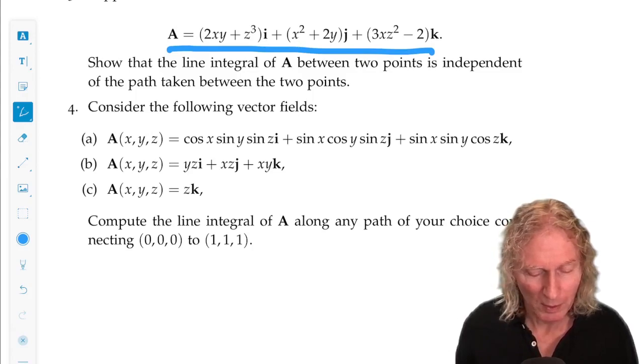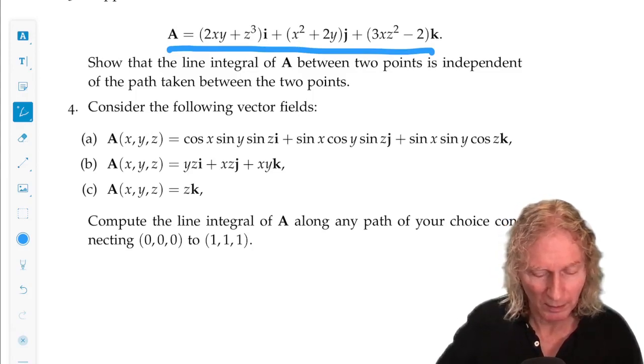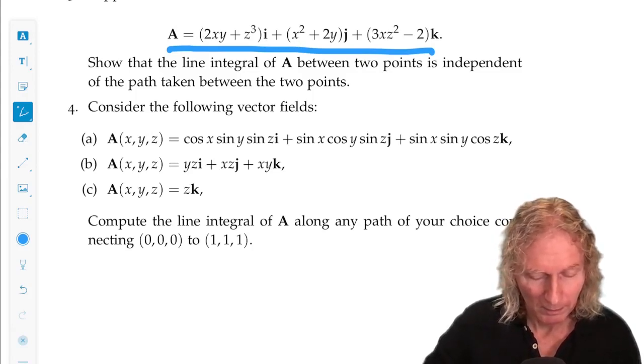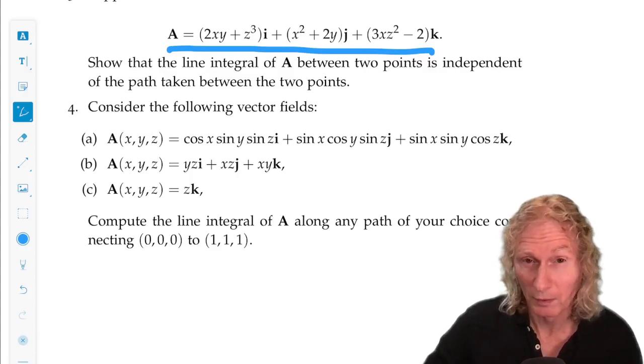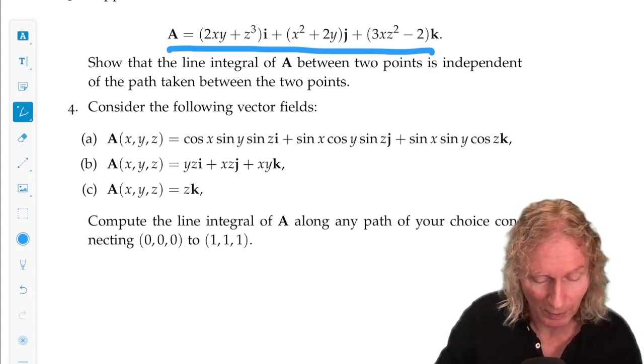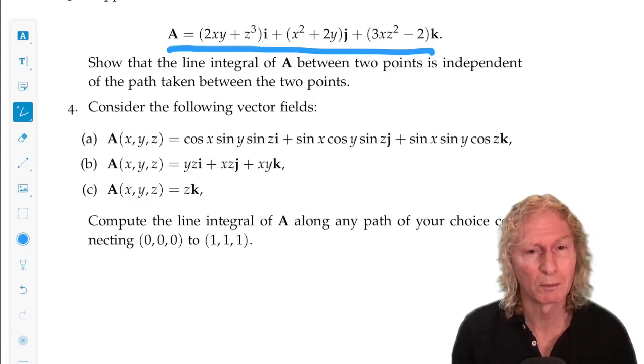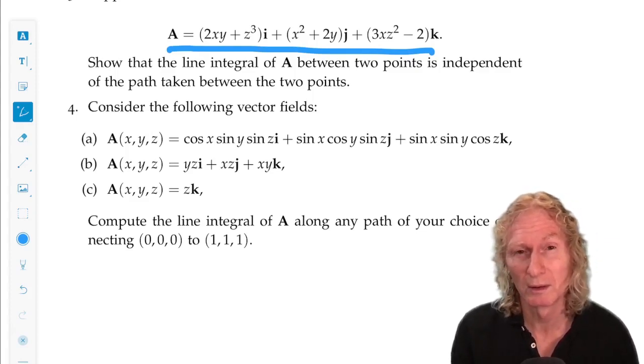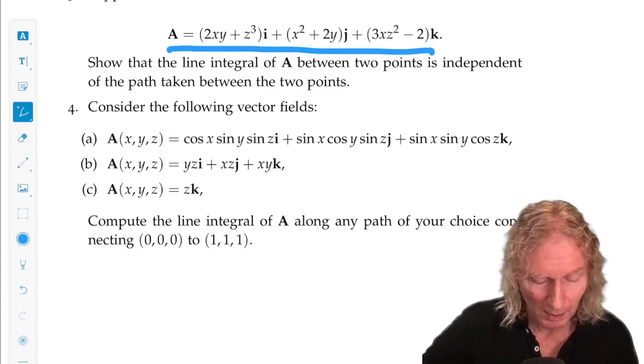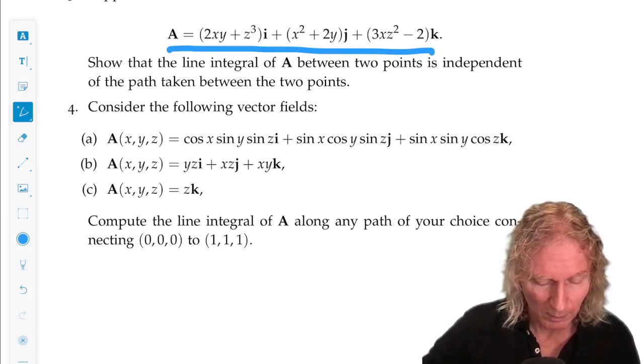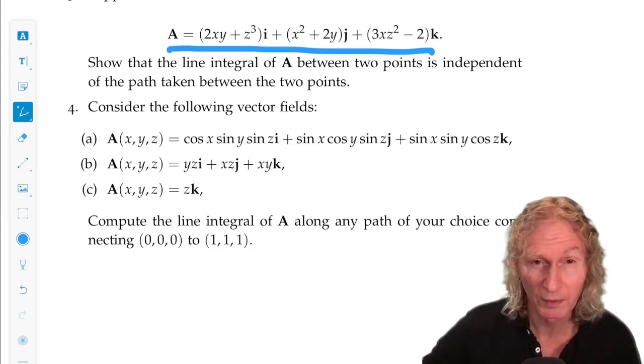Because that would mean that the curl of each is zero. You can verify that. That means you can take any path and you're going to get the same answer.